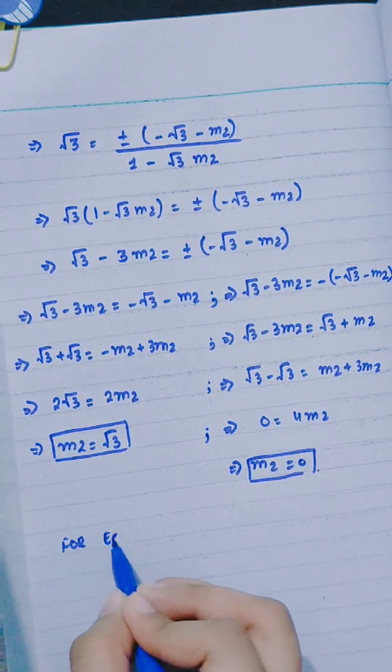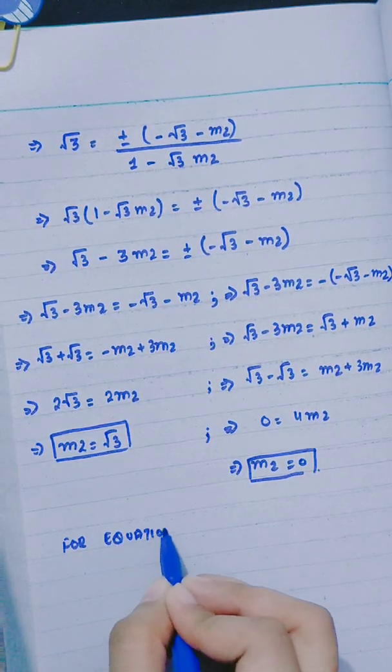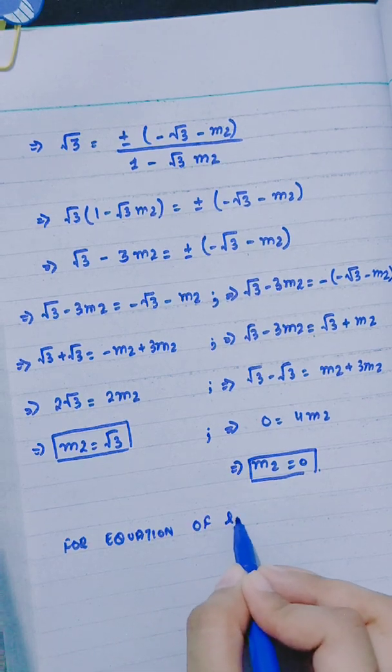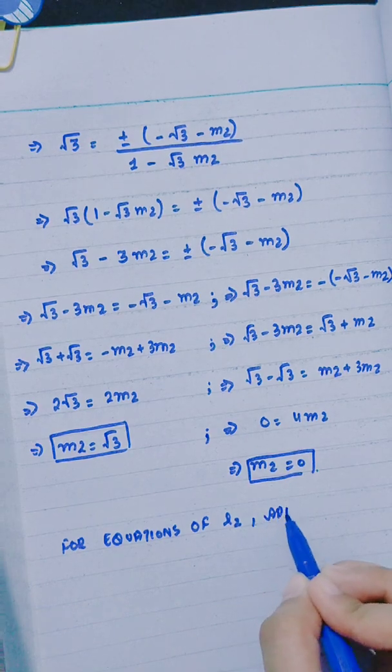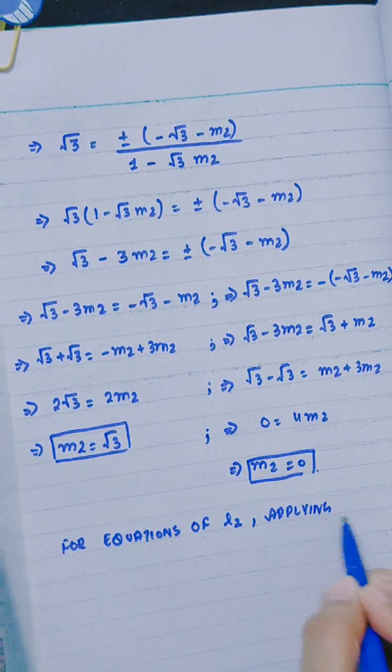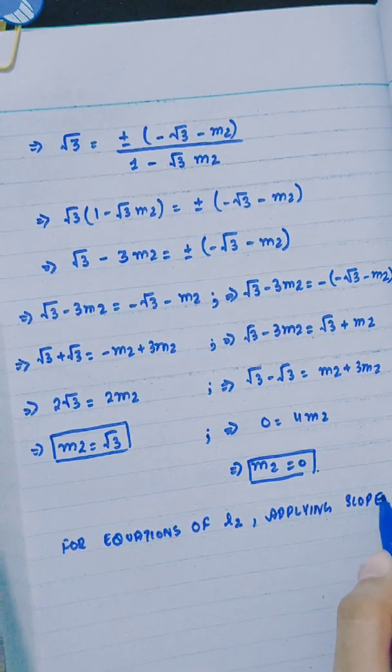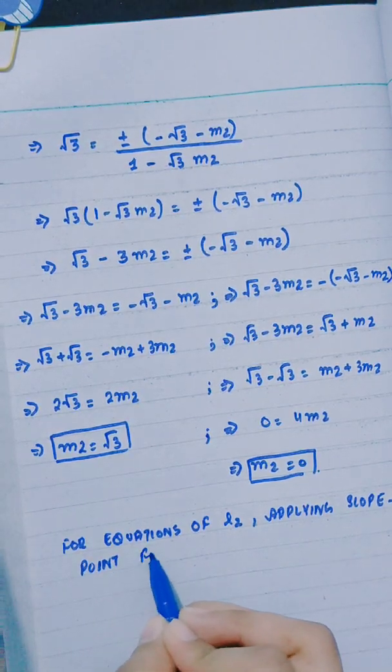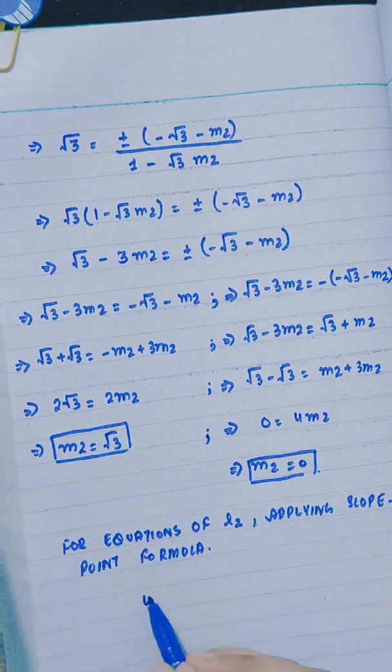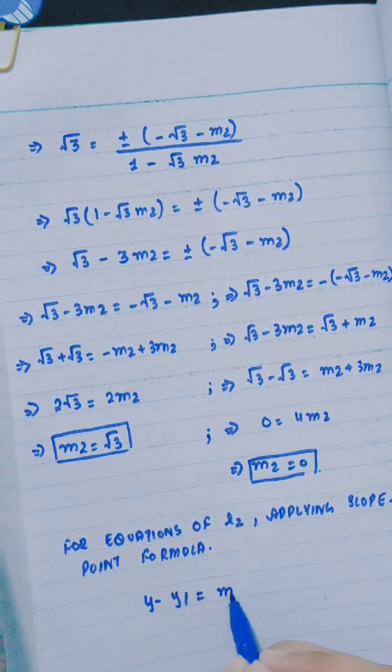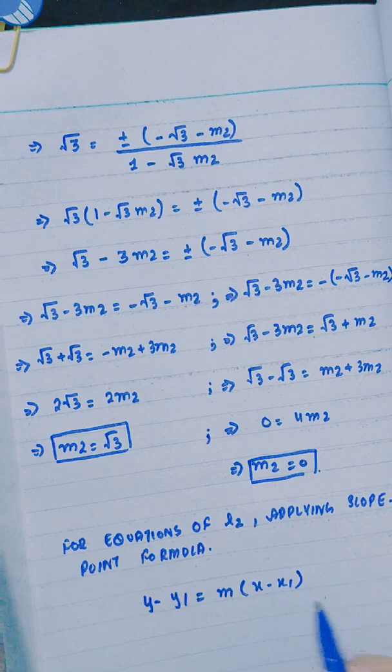Now for equation of L2, applying slope point formula: y - y1 = m(x - x1). Here x1 = 3 and y1 = -2. For m = √3: